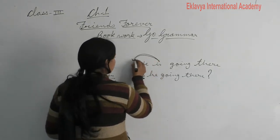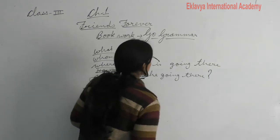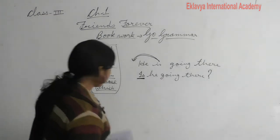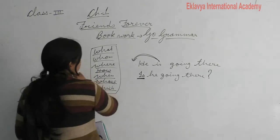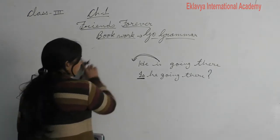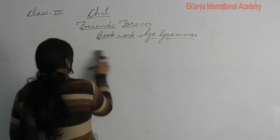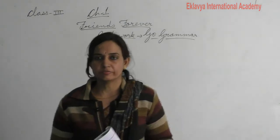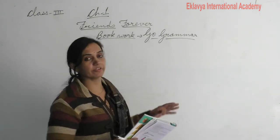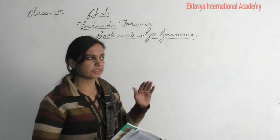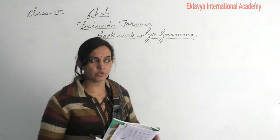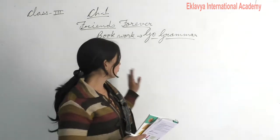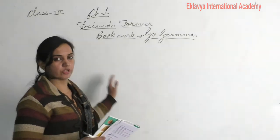When a question is formed from a helping verb, it becomes an interrogative sentence. Questions formed from WH-words are also interrogative. Interrogative sentences are of two types: yes/no type questions and WH-word questions. When you want to know only yes or no, these questions are formed by a helping verb. When you want to know more information about something or someone, we make a question from a WH-word.